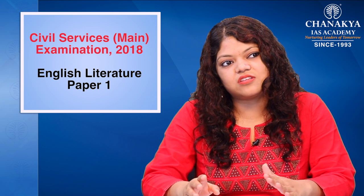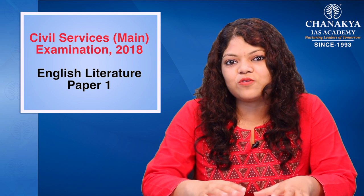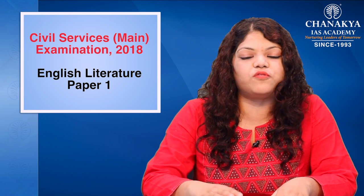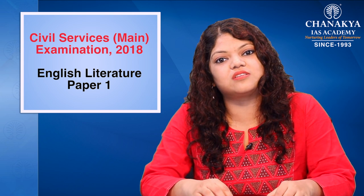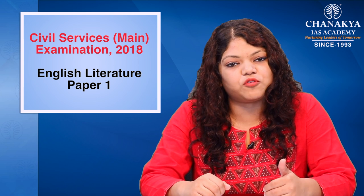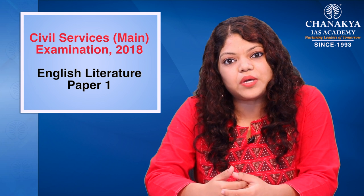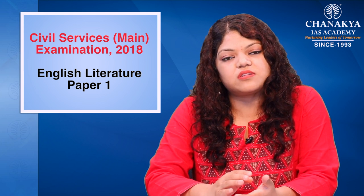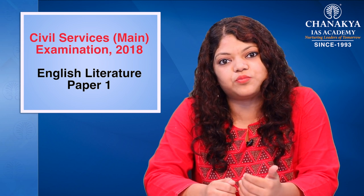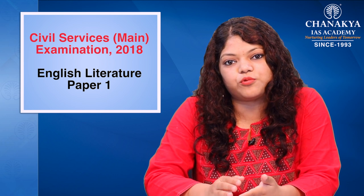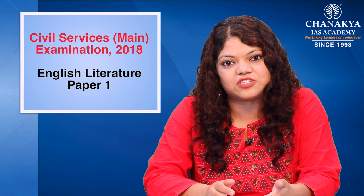The first compulsory question consists of 5 short notes, and because of this question you cannot ignore any section from the poetry because any poet can come in this section. Question number 5, which is also compulsory, is an unseen poetry analysis question. For that you have to build up your poetry analysis skills. Every question is given a certain set of marks — either 10, 15 or 20 marks — and they have a certain time limit. If you give more than the allotted time to any question then you will be compromising on the content of the other questions. So be very careful while timing your question paper.